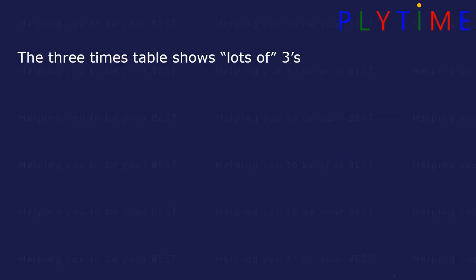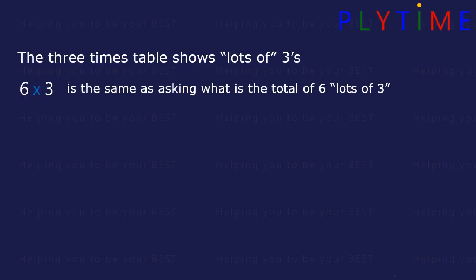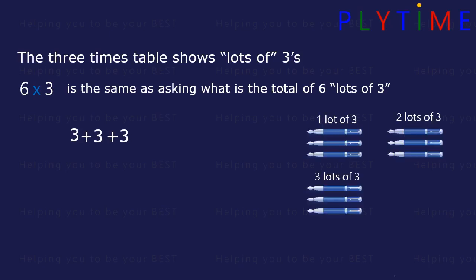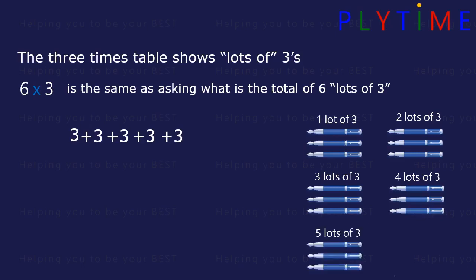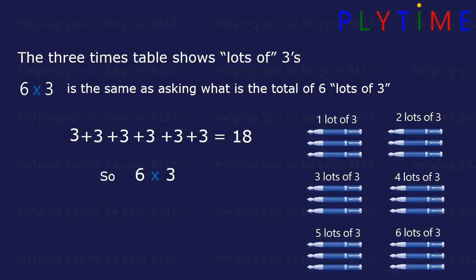The three times table shows lots of three. Six times three is the same as saying: what's the total of six lots of three? One lot of three is three, two lots of three is six, three lots of three is nine, four lots of three is twelve, five lots of three is fifteen, six lots of three is eighteen. So six times three equals eighteen.